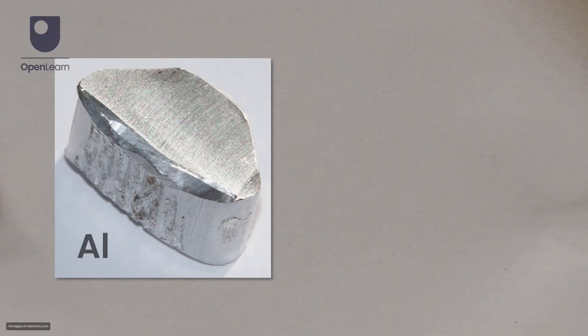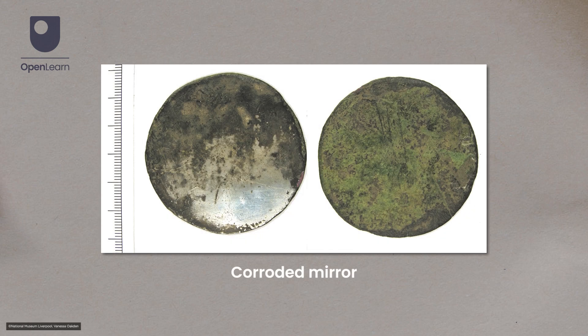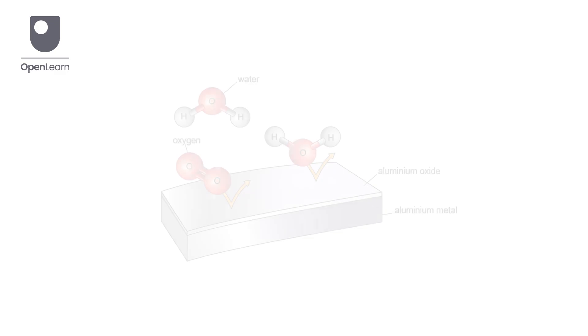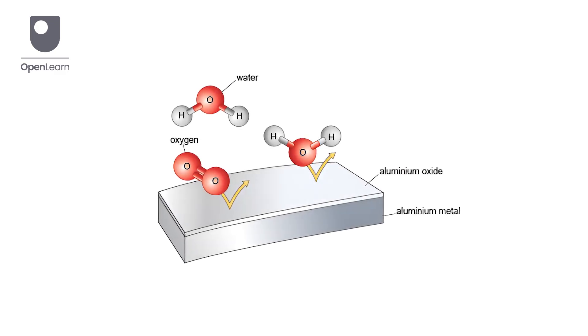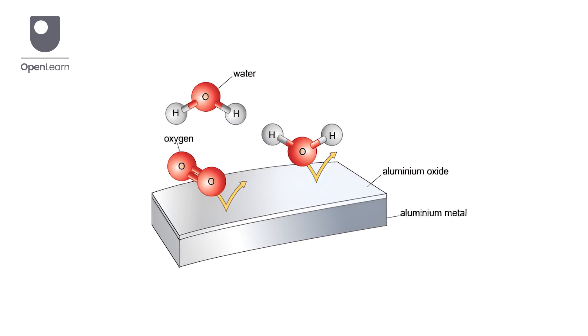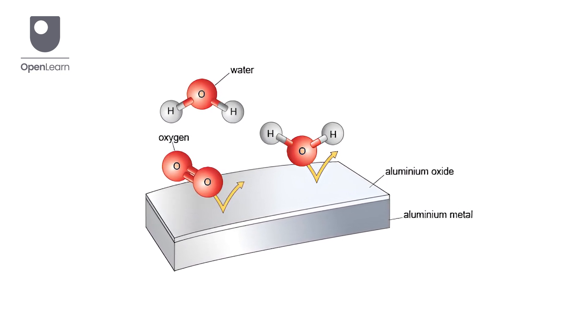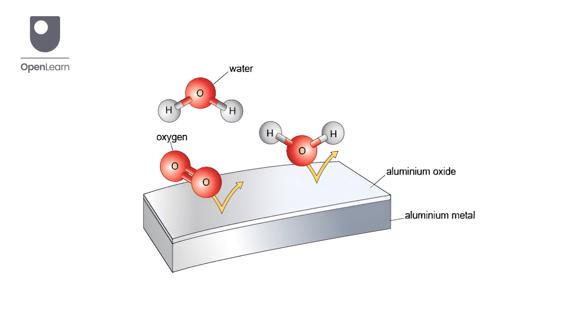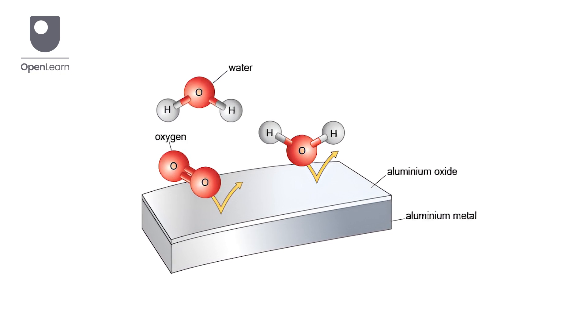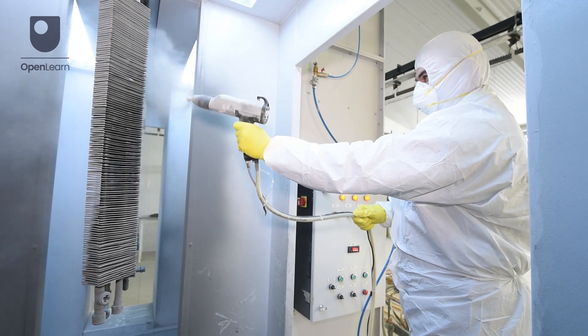Other metals, such as aluminium or zinc, also react with oxygen in the presence of water to form oxides. However, these oxides can stick to the surface of the underlying metal, forming thin but hardy layers that can protect the metal underneath from further corrosion.